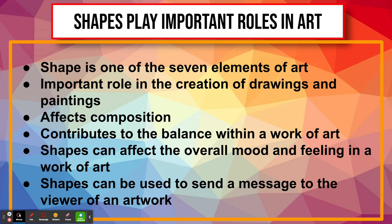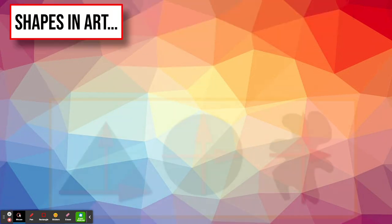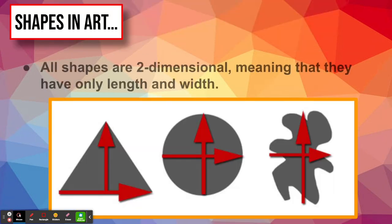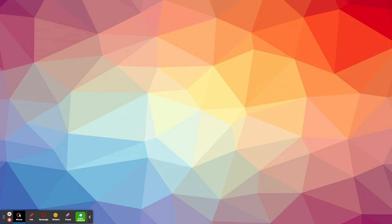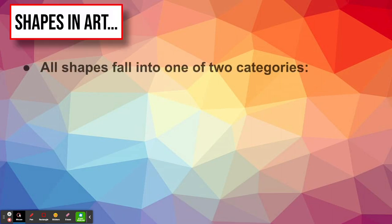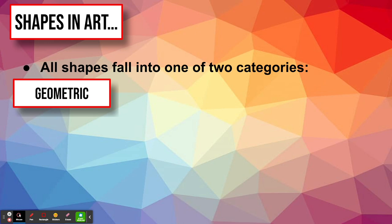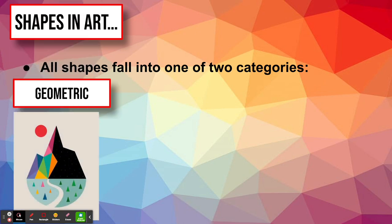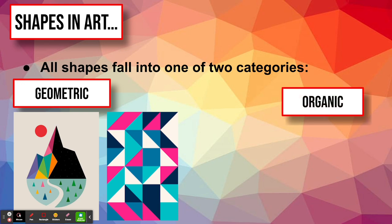It's also important to know that all shapes are two-dimensional — that is, they have only length and width. In any artwork, all shapes will fall into one of two categories: geometric or organic.